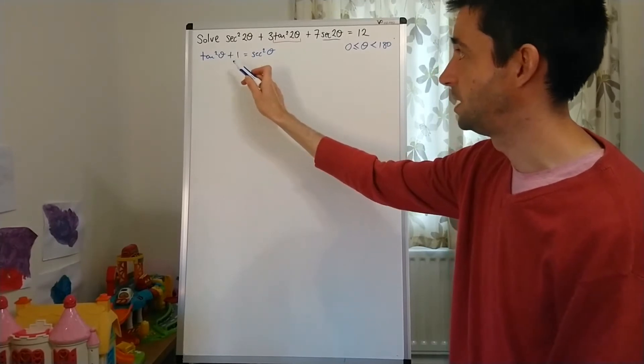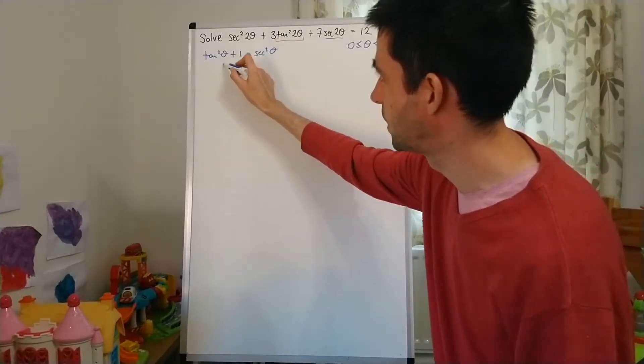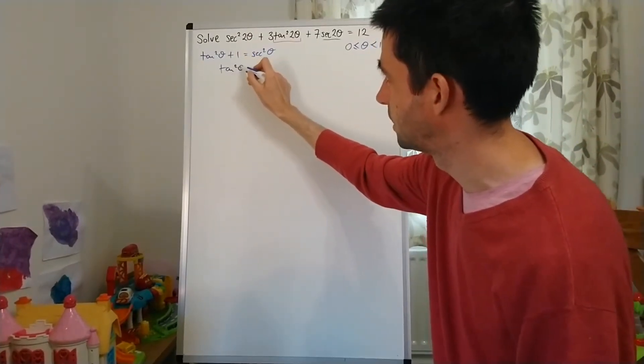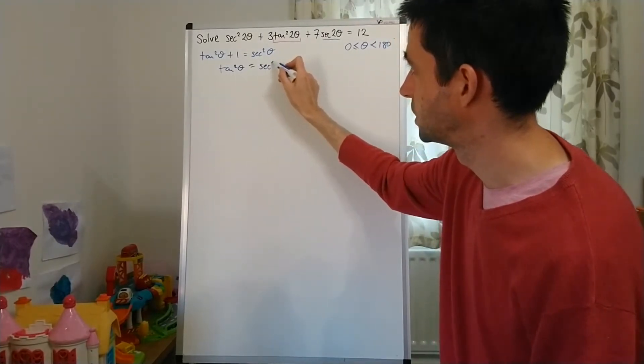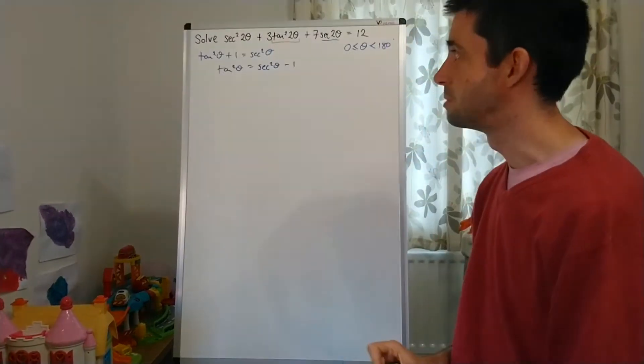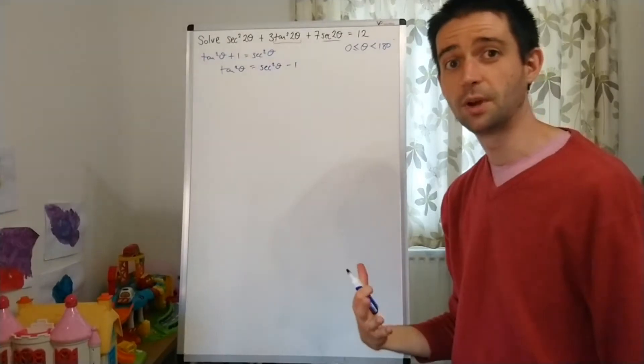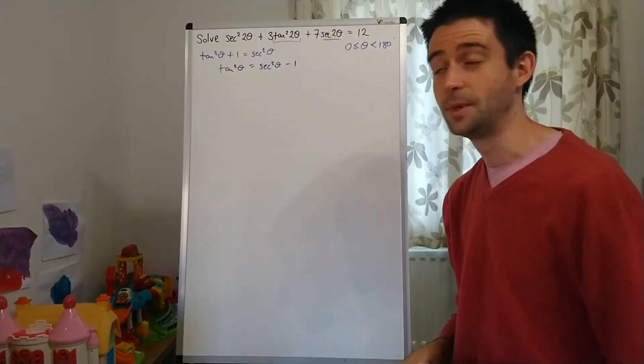And that just means I'm going to have to do a slight rearrange of the identity. Rather than tan²θ + 1 = sec²θ, I'm going to be using tan²θ = sec²θ - 1.